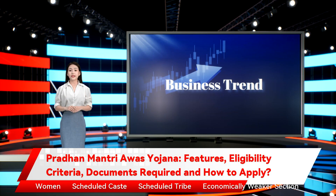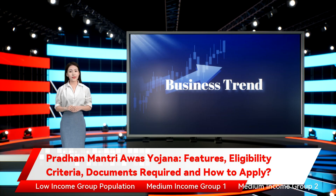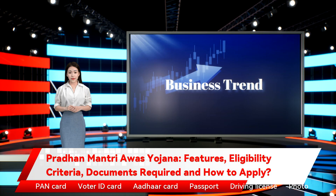The scheme covers the following beneficiary categories: Women, Scheduled Caste, Scheduled Tribe, Economically Weaker Section, Low Income Group, and Medium Income Group 1 and Medium Income Group 2.